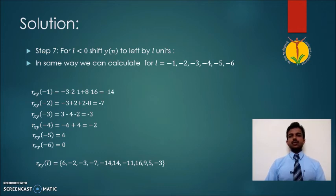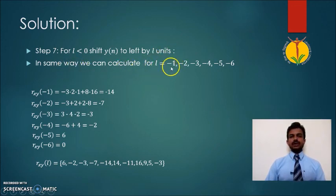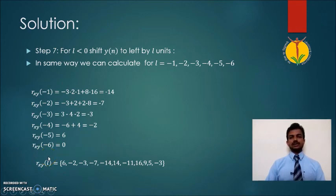Similarly, we have to apply L values which are less than zero. In such a case, the signal Y(N) shifts to the left side by L units. We can apply different values of L: minus one, minus two, minus three, minus four, minus five, or minus six. After that we get R of XY in this fashion. So this R of XY gives the resemblance, or the cross correlation, between the signals X and Y.